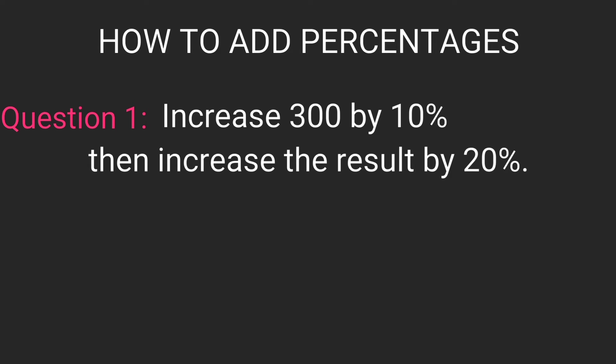Now looking at the question on the screen, it says: Increase 300 by 10%, then increase the result by 20%.